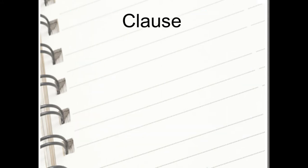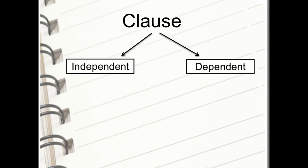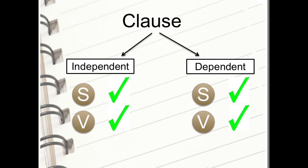A clause is a part of a sentence that has a subject and a verb. There are two main types of clauses: the independent clause and the dependent clause. The independent clause is complete on its own — it has a complete idea or thought. The dependent clause does not give a complete thought; it needs extra words to make a complete, meaningful sentence.